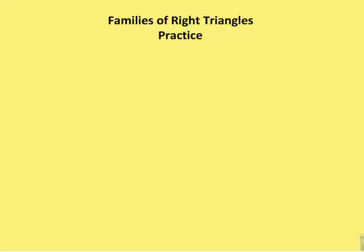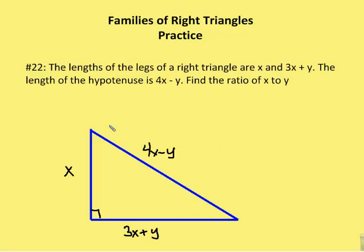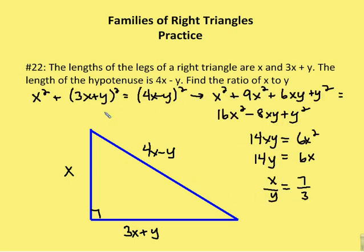Let's move on to a couple problems. First one, the lengths of the legs of a right triangle are x and 3x plus y. The length of the hypotenuse is 4x minus y. Find the ratio of x to y. Well, we know that x squared plus (3x plus y) squared equals (4x minus y) squared.